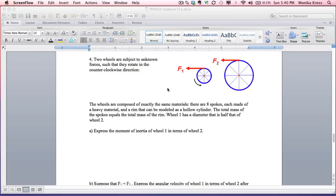The first part asks us to express the moment of inertia of wheel number one in terms of wheel number two. The moment of inertia is going to be the sum of all of the moments of inertia of the whole entire system. It's the moment of inertia of the hollow cylinder, which is mr squared, and the moment of inertia for each of the individual spokes. Their total mass is m, which means that the mass of any one of these little spokes is one-eighth m because there's eight of them.